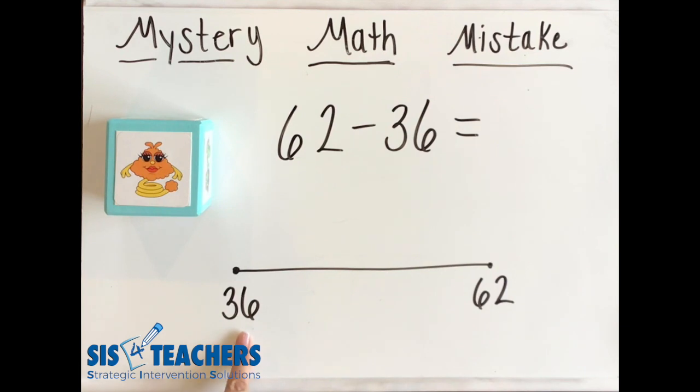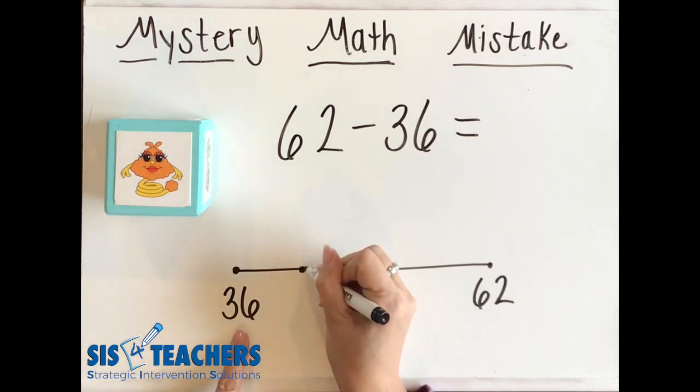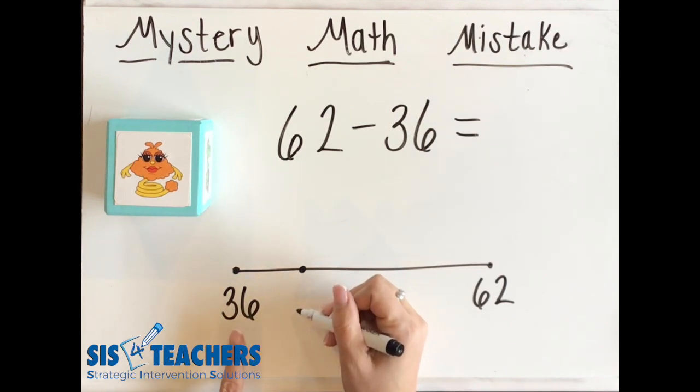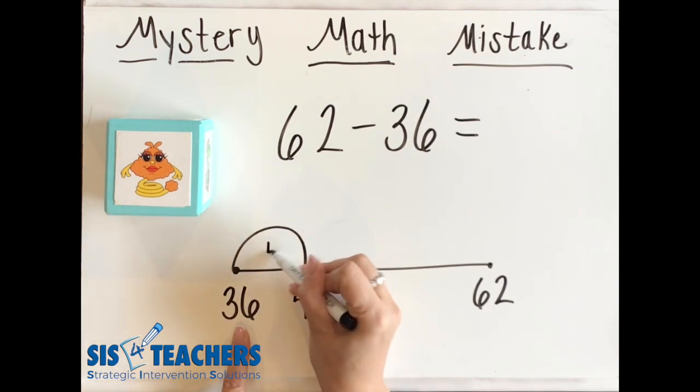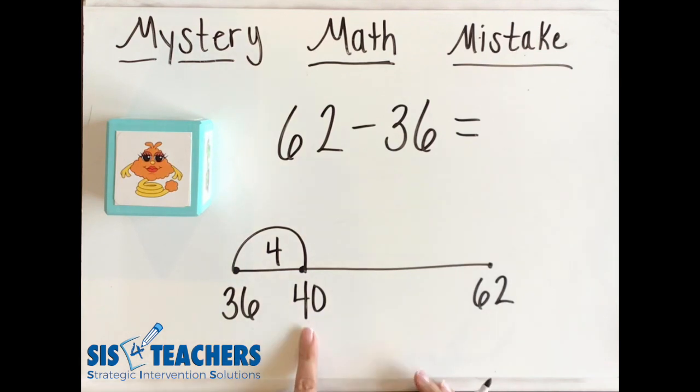We know that Springling likes to hop on friendly numbers and I know that a friendly number that's really close to 36 is 40. So we're going to tell Springling to hop, Springling hop, and she's going to hop four.